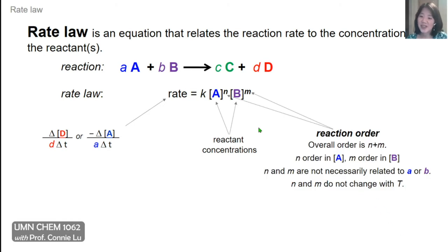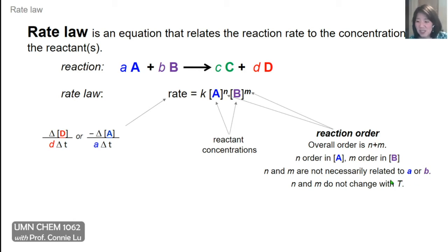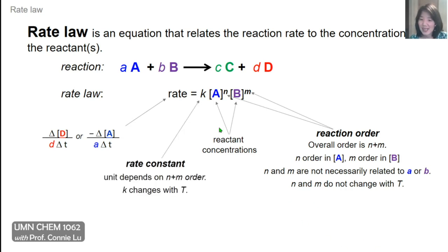The reaction order refers to these exponents N and M. Because there are two of them, the overall reaction order is their sum. You can say a reaction is Nth order in A and Mth order in B, but the total reaction order is N plus M. N and M must be determined experimentally — they are not necessarily related to the stoichiometric coefficients of the reaction, and they do not change with temperature. K is again the rate constant, with units depending on the overall reaction order, and K can vary with temperature.